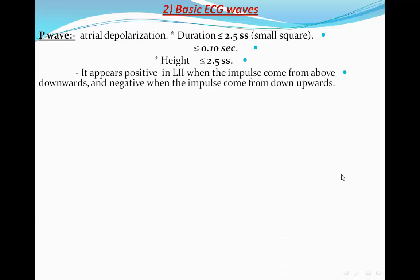The P wave represents atrial depolarization. Its duration shouldn't exceed 2.5 small squares in width, which is 0.10 of a second. Its height or voltage shouldn't exceed 2.5 small squares. It appears positive in lead II when the impulse comes from above, from the SA node downwards towards the AV node, and negative if the impulse comes from below upwards, like in nodal rhythm.